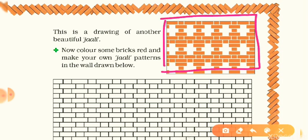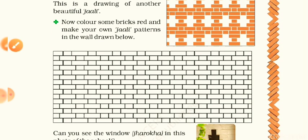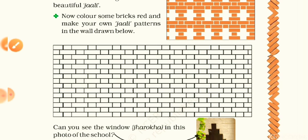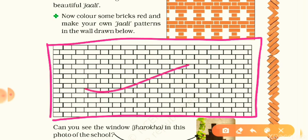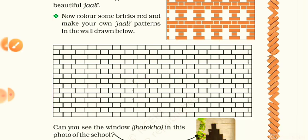On the next page there is a drawing of another beautiful jali. Color some bricks red and make your own jali patterns in the wall drawn below. This is your activity — draw some jali patterns as you like in your paperwork.